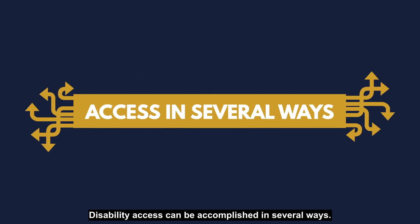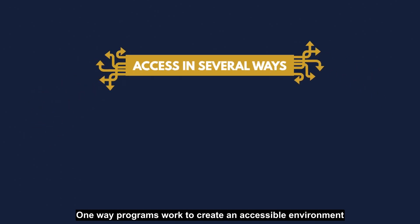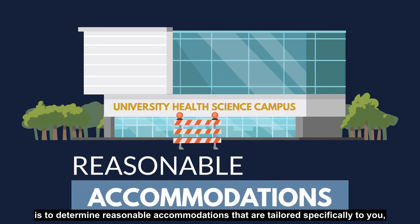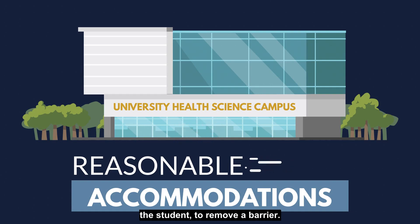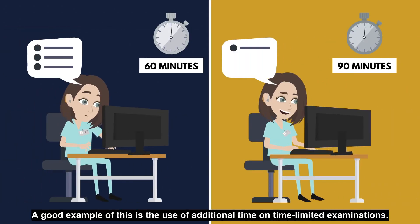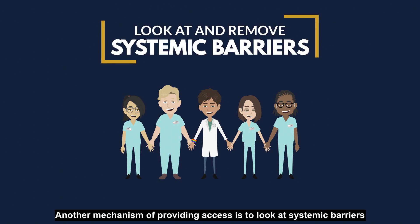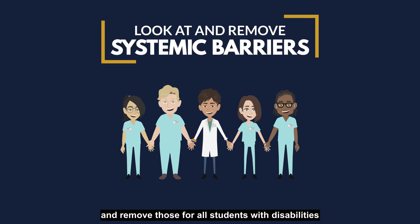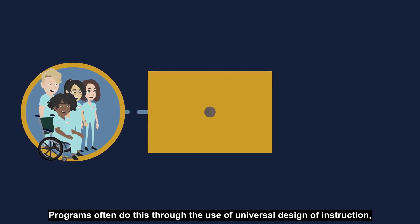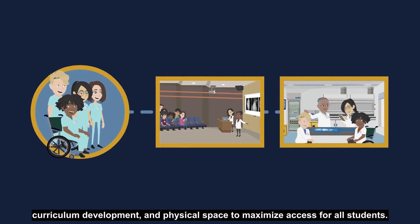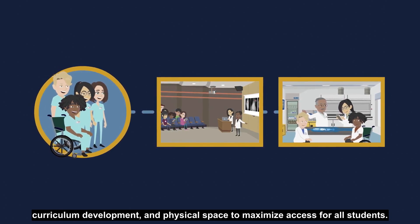Disability access can be accomplished in several ways. One way programs work to create an accessible environment is to determine reasonable accommodations that are tailored specifically to you, the student, to remove a barrier. A good example of this is the use of additional time on time-limited examinations. Another mechanism of providing access is to look at systemic barriers and remove those for all students with disabilities. Programs often do this through the use of universal design of instruction, curriculum development, and physical space to maximize access for all students.